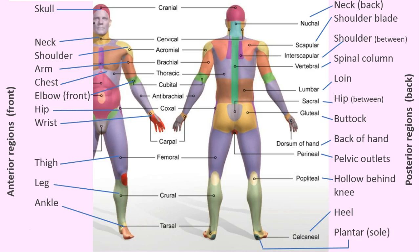Those are Latinized — some are Greek as well. The nucha is the back of the neck, scapular is the shoulder blade, interscapular is the area between — because the prefix 'inter' means between — vertebral is the spinal column, lumbar is the loin, sacral is the hip region, gluteal is the buttocks. Back of the hand is dorsum, perineal is the pelvic outlet area around the openings, popliteal is the hollow behind the knee, calcaneal is the heel, and at the bottom of the foot is the plantar, which in English is the sole.